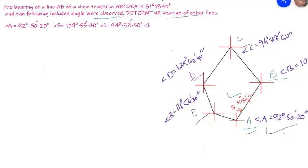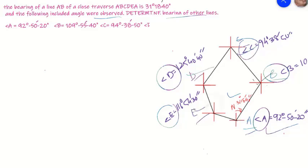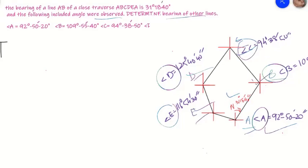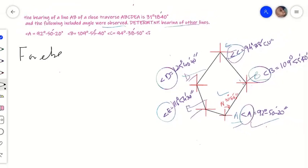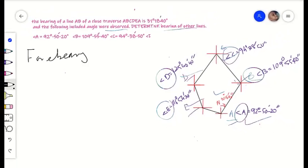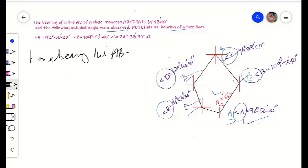The included angles A, B, C, D, and E are given and we are required to find out the bearings of the rest of the lines. We are given the forebearing of line AB, which is equal to 31 degrees 18 minutes and 40 seconds.